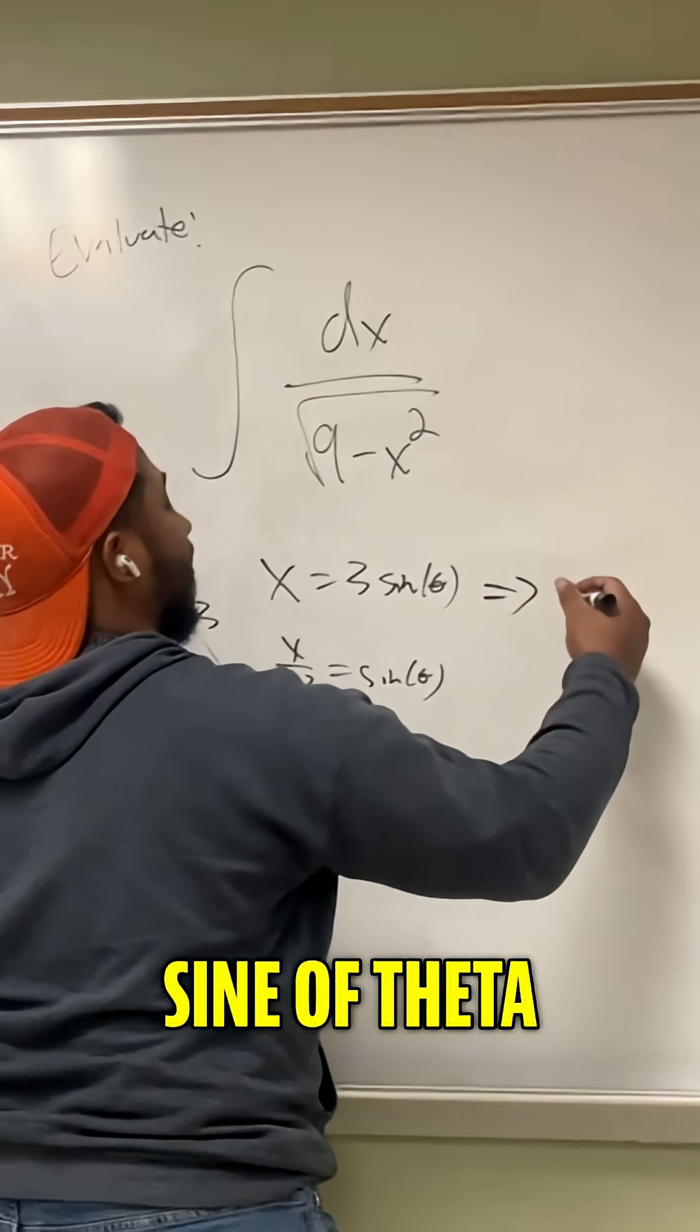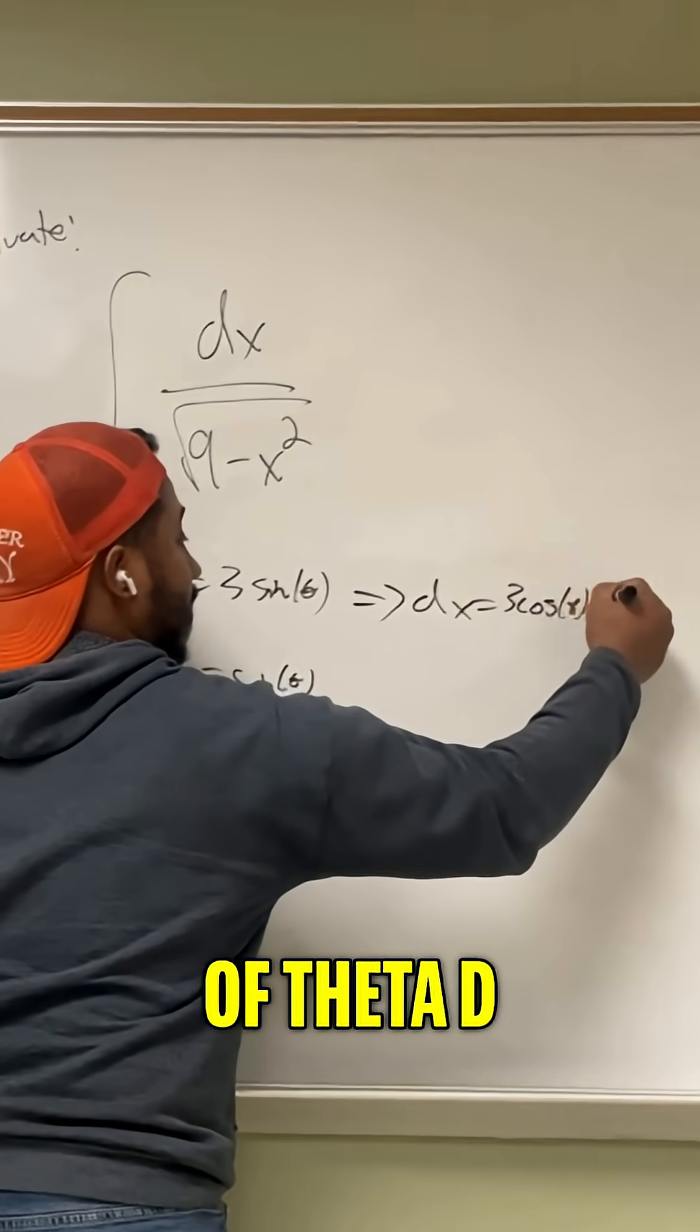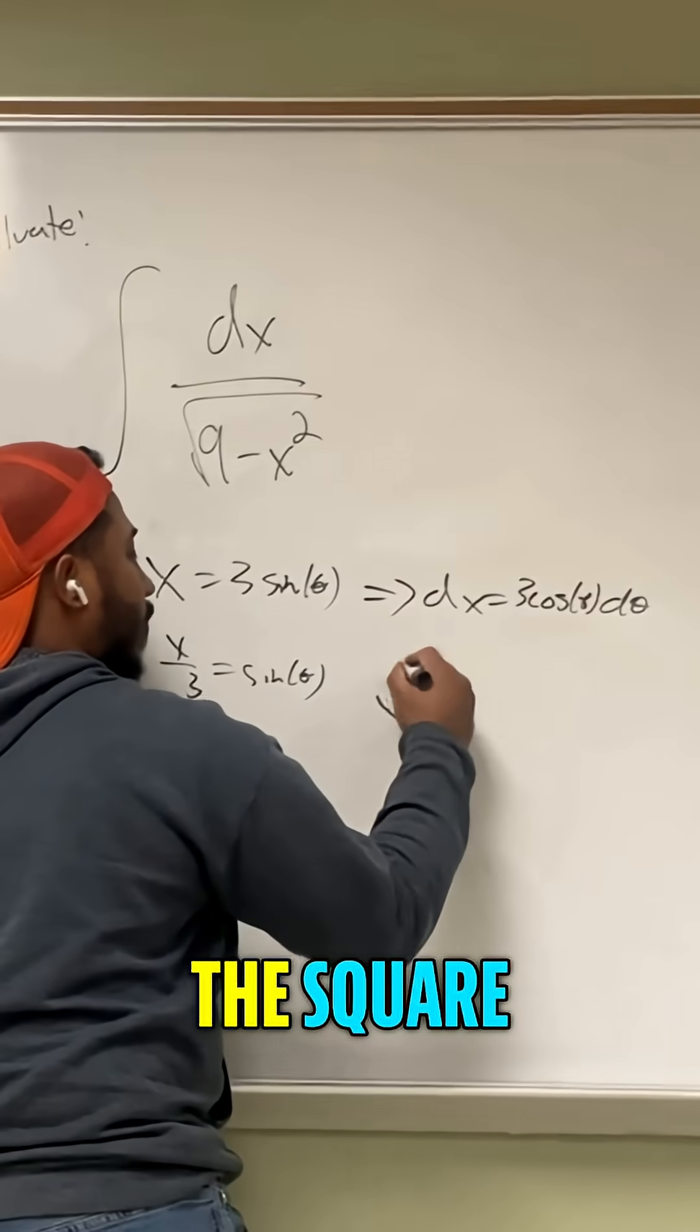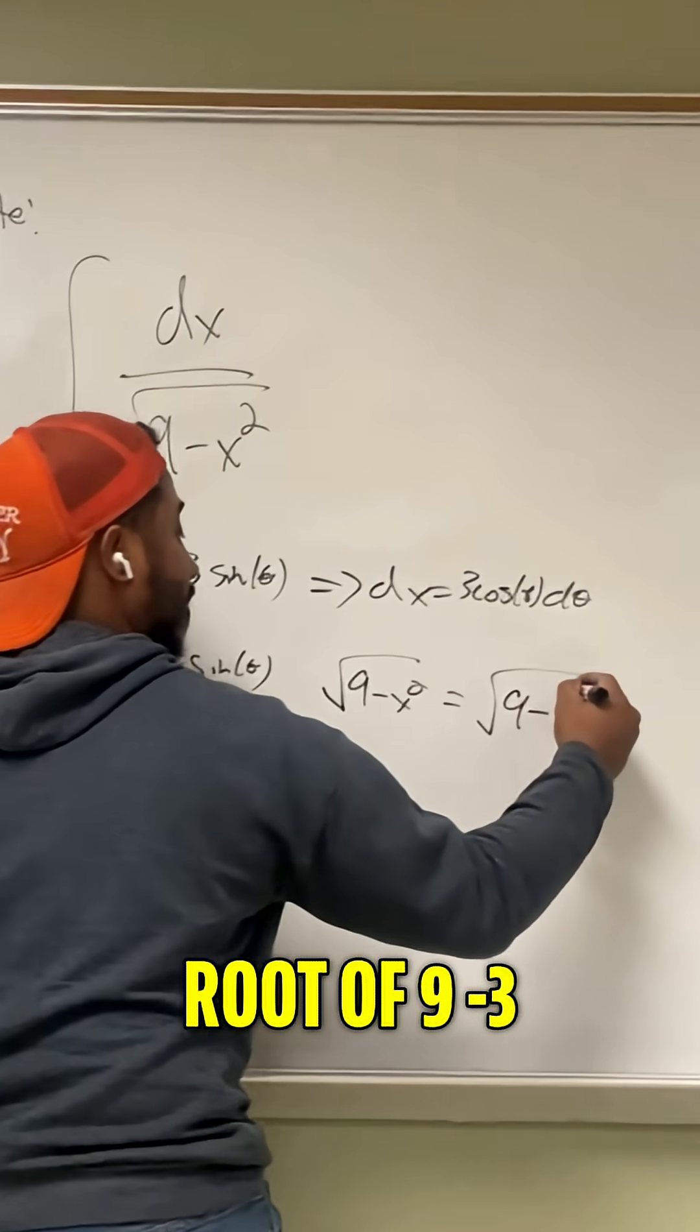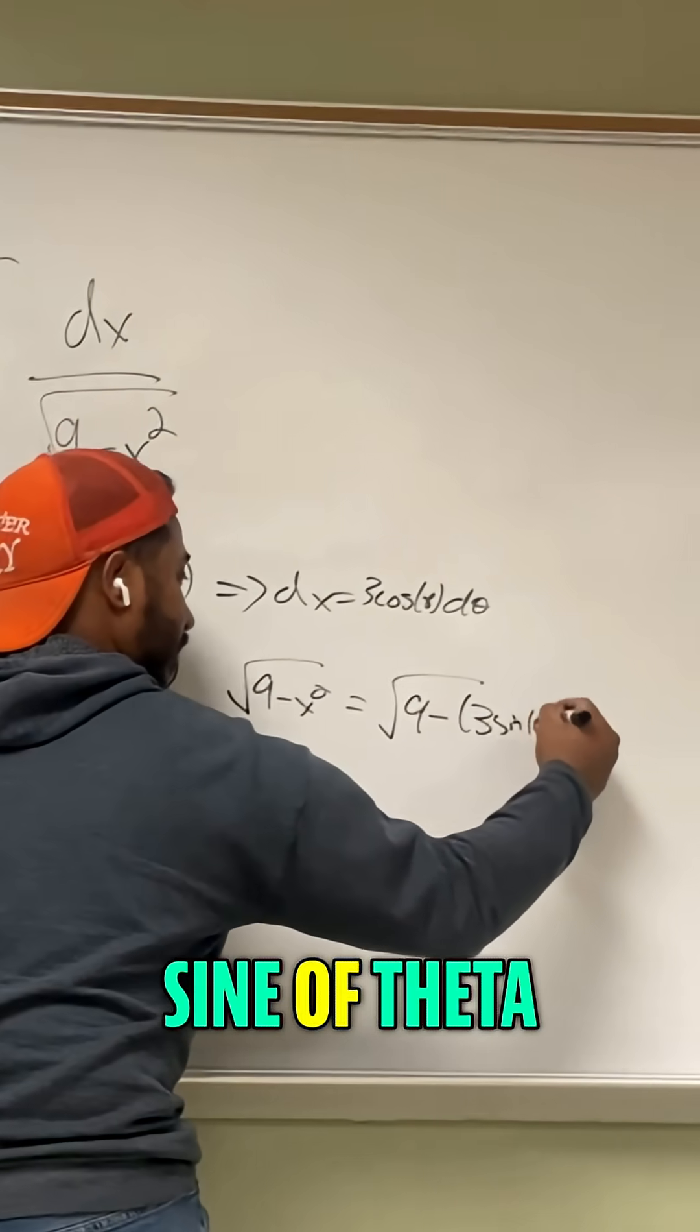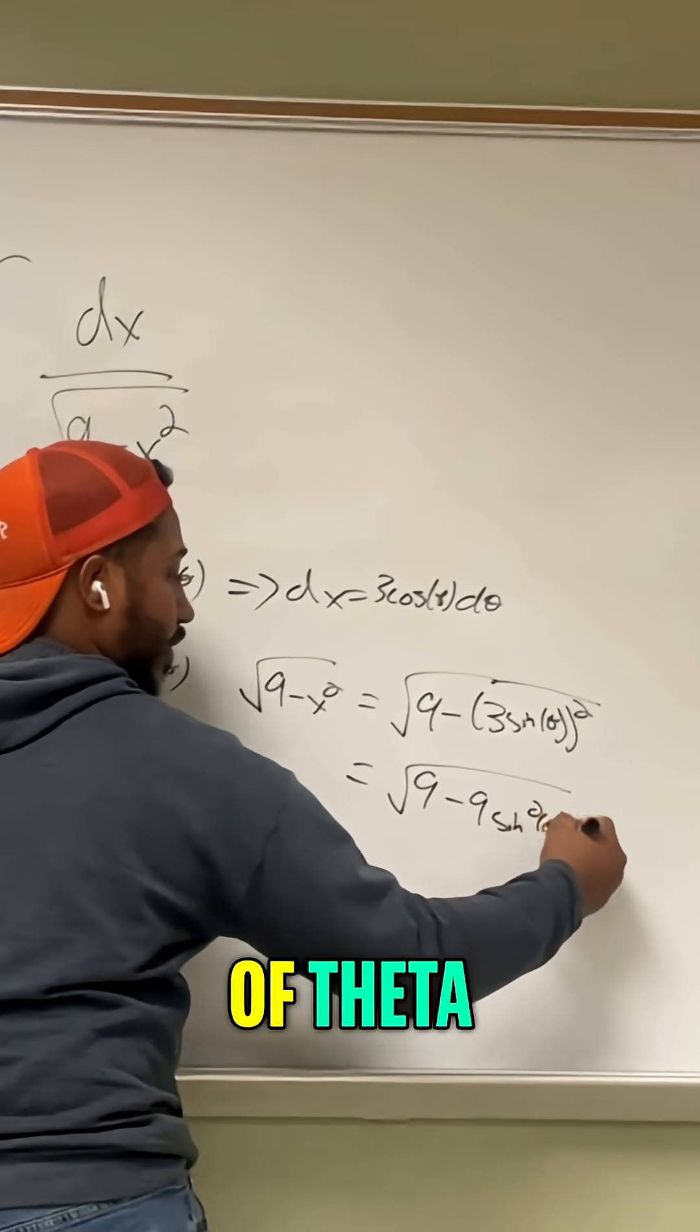So from there, if x equals 3 sine of theta, then we know that dx equals 3 cosine of theta d theta. And we see that the square root of 9 minus x squared would be the square root of 9 minus 3 sine of theta squared, which is the square root of 9 minus 9 sine squared of theta.